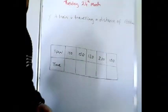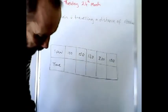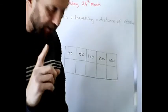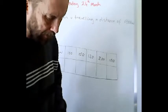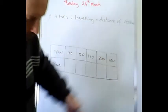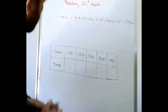Okay, I thought we'd go through one of the exercises on page 236. So exercise one, here we've got a train traveling a distance of 600 kilometers. The first question here is...